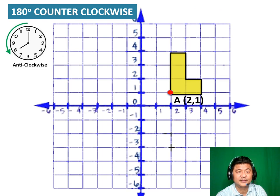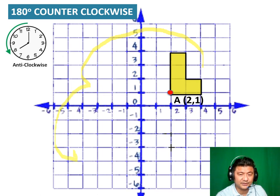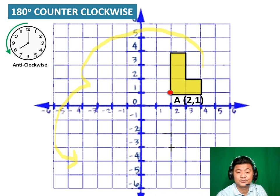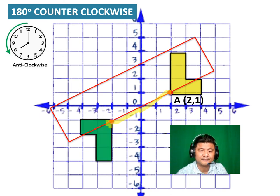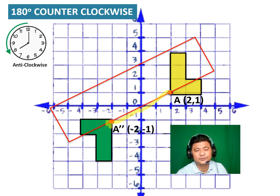Let's now do 180-degree counterclockwise. The 90 will be here, and the 180 would be somewhere there. How do I guarantee it's 180 degrees? You could use a protractor, a paper, or a straight edge. Letter A would be there. It's going to look like this — pointing downward. So the new coordinate would be (negative 2, negative 1).